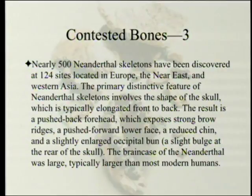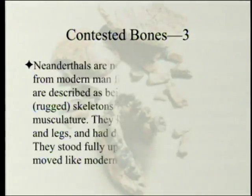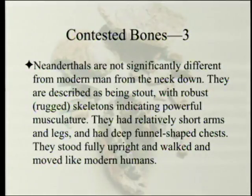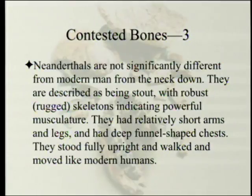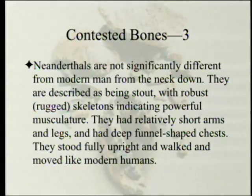The brain case of the Neanderthal was large — typically larger than most humans. They had more brains than we did. Neanderthals are not significantly different from modern man from the neck down. They are described as stout with robust, rugged skeletons indicating powerful musculature. They had relatively short arms and legs and deep funnel-shaped chests. Funnel-shaped is something not as typical of humans and more typical of apes. We're going to see some skeletons in a bit.